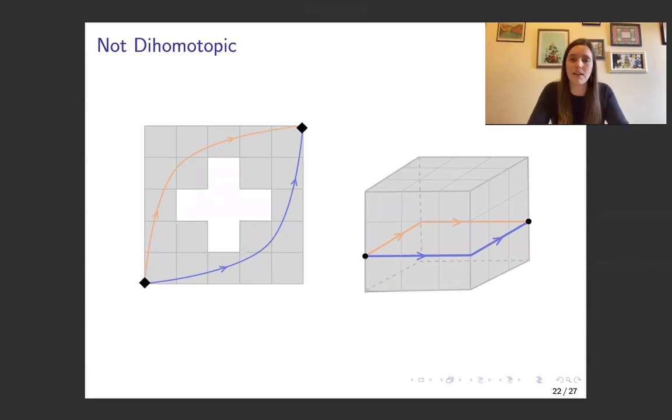Here are some examples of not dihomotopic paths. So on the left, the blue and orange path just aren't homotopic to begin with. So they're not going to be dihomotopic. And then on the right, we have this three by three by three cube where the interior is removed.